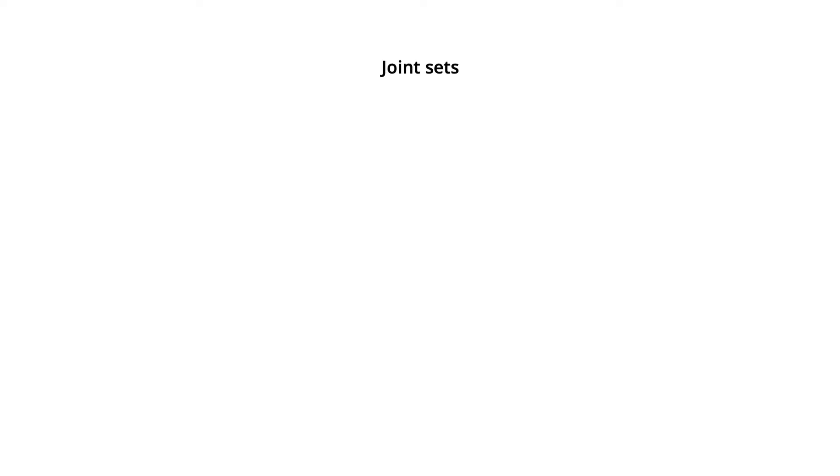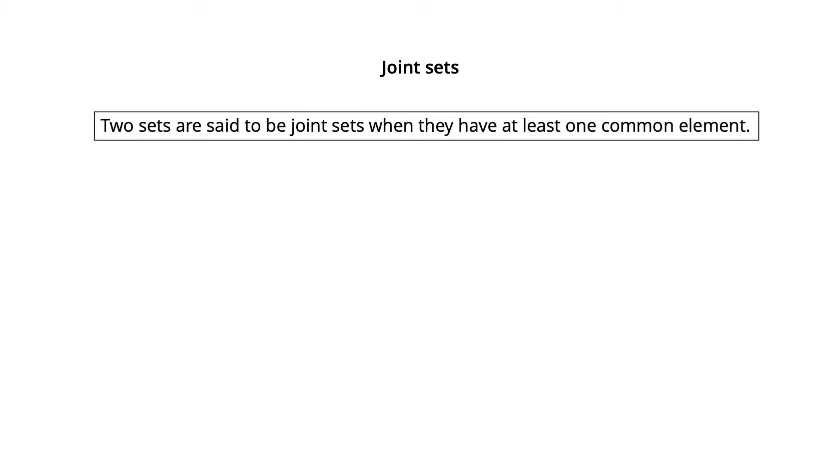Joint sets. Two sets are said to be joint sets when they have at least one common element. For example, we have the elements of A, B, C, D and E in set A and A, E, I, O, U in set B.